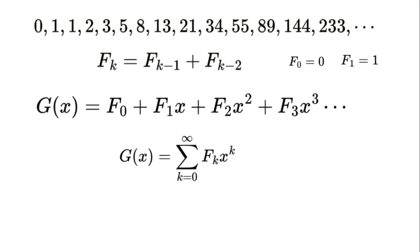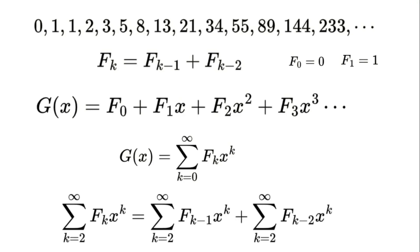Now let's use the Fibonacci recurrence relation: f(k) = f(k-1) + f(k-2). We'll multiply both sides by x^k and sum over all k starting from 2. This gives us the sum from k=2 to infinity of f(k)·x^k equals the sum from k=2 to infinity of f(k-1)·x^k plus the sum of f(k-2)·x^k. Don't let the notation scare you — we're just rewriting the recurrence in terms of the generating function.